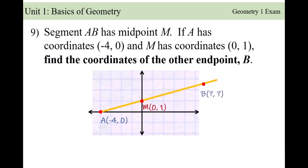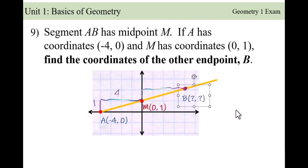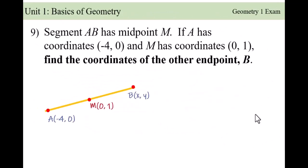Once you have it graphed, we're going to count boxes using slope to find B. To get from A to M, I go up one and over four. To find B, we do the exact same thing from M — go up one box and over four. That's where B lands. The x-coordinate is 4 and the y-coordinate is 2, so the other endpoint is (4, 2).